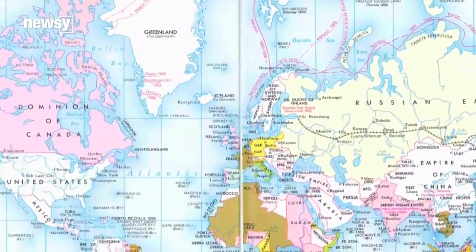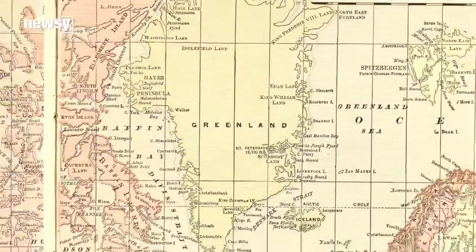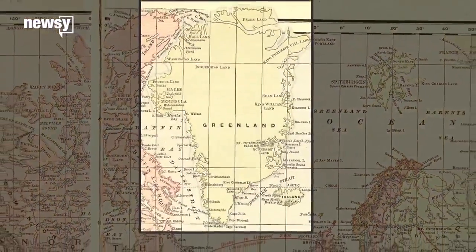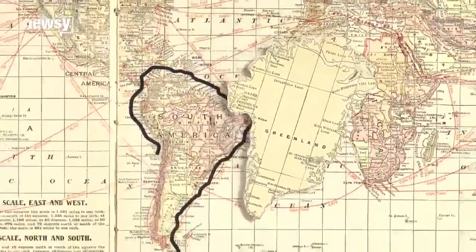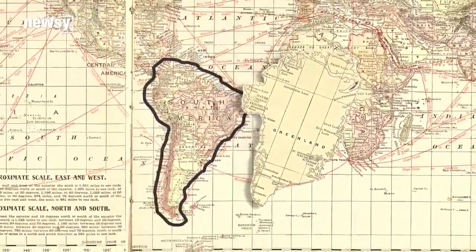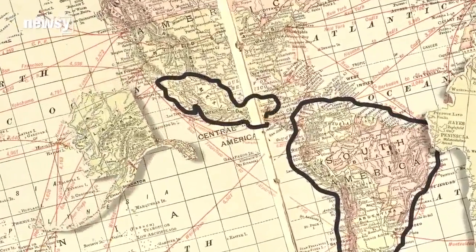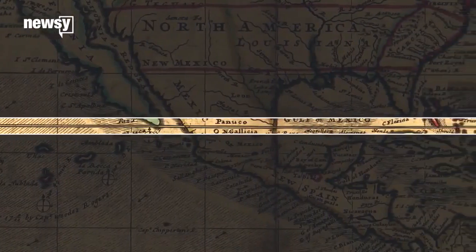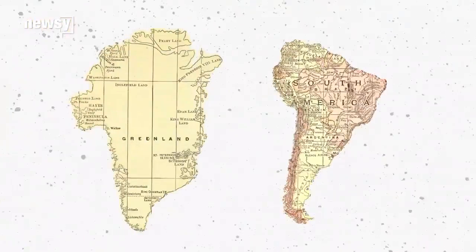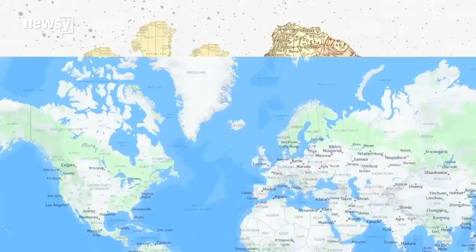This creates what some map makers call the Greenland problem. On Mercator's map, Greenland is huge — bigger than the entire continent of South America. The same thing happens with Alaska; the state looks bigger than the entire country of Mexico. The farther land is from the equator on a Mercator map, the more stretched out it looks. In reality, South America is eight times the size of Greenland, and Mexico is actually bigger than Alaska.